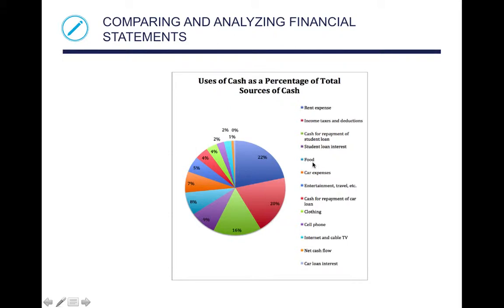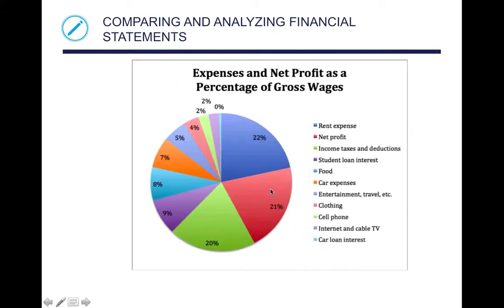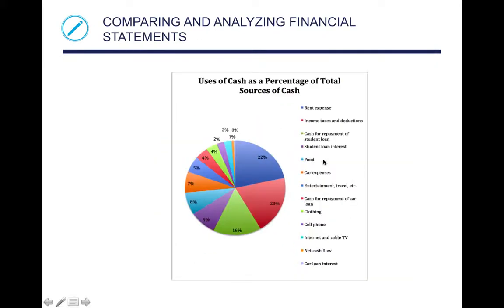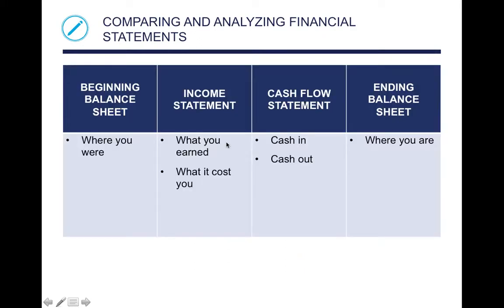This next chart is a bit smaller — uses of cash as a percentage of total sources of cash. Again the biggest items are rent expense, income taxes and deductions, and cash for repayment of student loans. The beginning balance sheet is where you currently are. The income statement shows what you earned and what it cost you. The cash flow statement shows cash in and cash out. The ending balance sheet shows where you are.